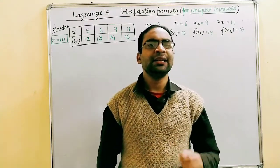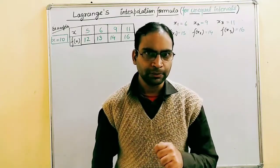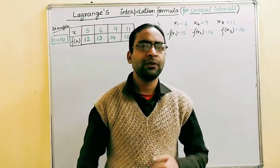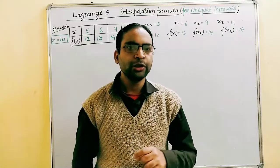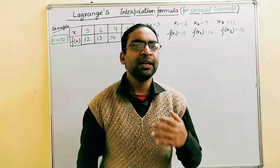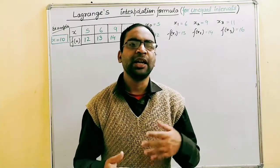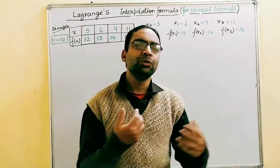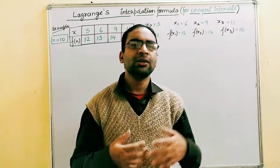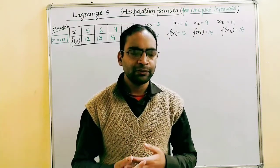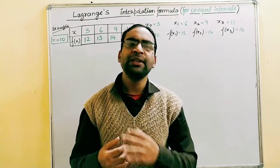Today's lesson is dedicated to the Lagrangian interpolation formula for unequal intervals. In the previous lesson we had seen another formula for unequal intervals — Newton's divided difference formula. If you want, you can see that video. We had already discussed many other formulas in interpolation: Newton's Gregory forward, Newton's Gregory backward, Bessel's, Stirling's, Gauss's forward, and Gauss's backward formula. You can go to the channel's playlist and watch all those solutions.